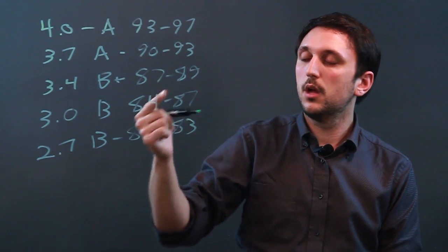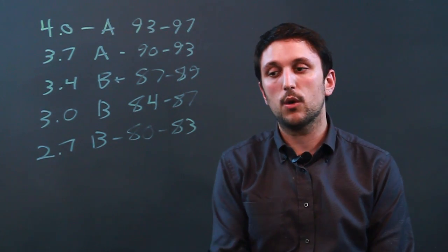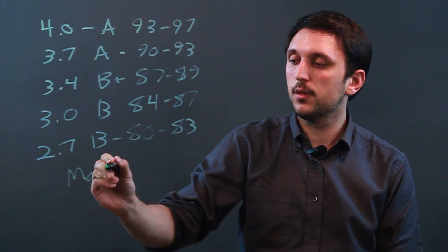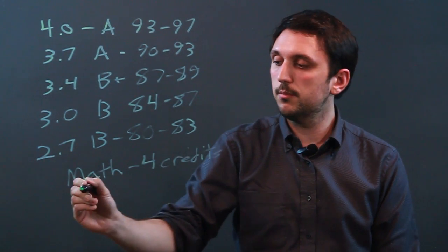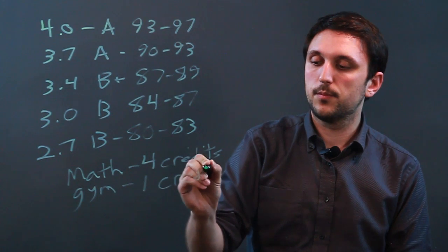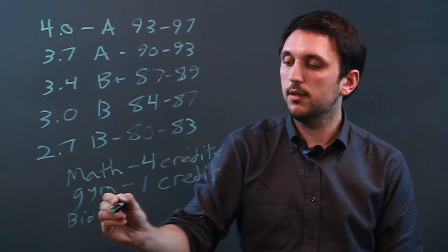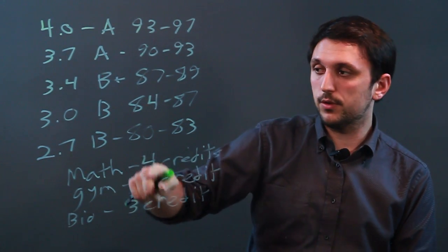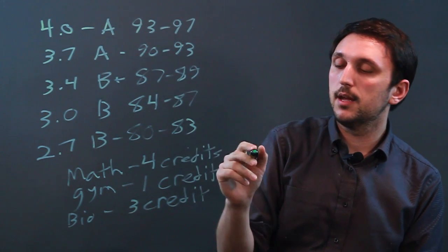So using these, what matters is how many credits the courses you're taking are worth. So if you are taking math worth 4 credits, gym is 1 credit, and Bio is 3 credits, well they're going to count differently depending on the grade. So let's say your 4 credit math class, you have a 94.